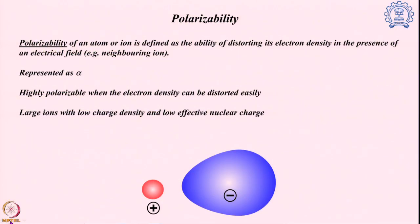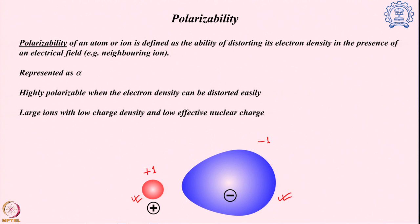Here I am showing you an example of how we can define polarizability. I am showing you 2 ions: 1 positive ion and 1 negative ion. Both these ions actually have 1 charge — the red one having a plus 1 charge and the blue one having minus 1 charge.